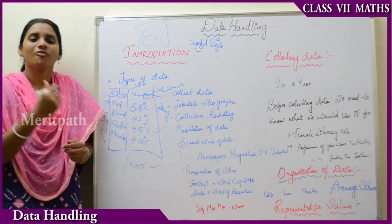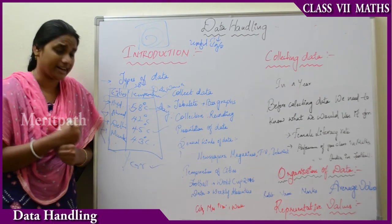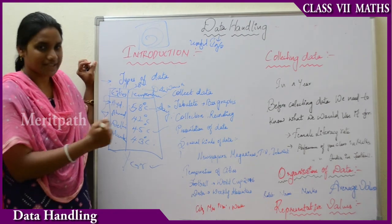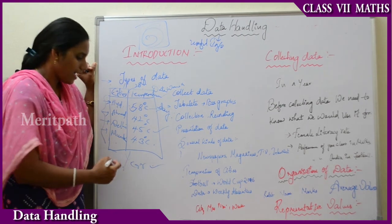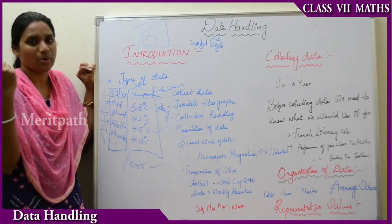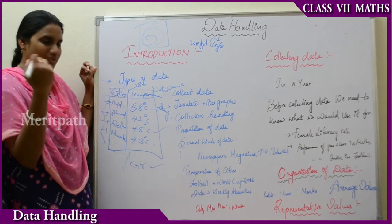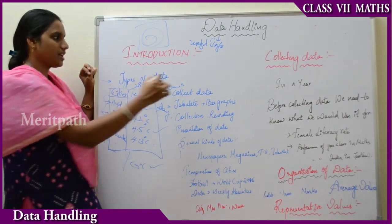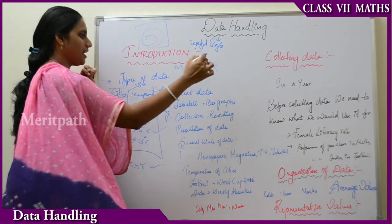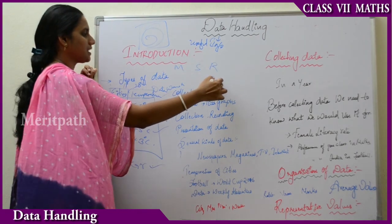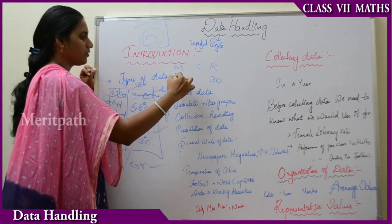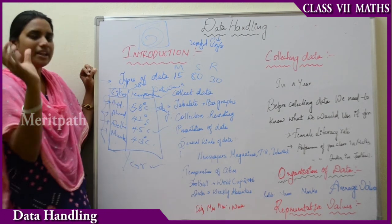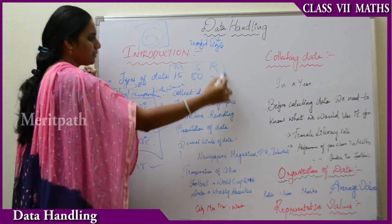Now let us see the next point, that is organization of data. What do you mean by organization of data? For example, suppose I am a maths teacher — I got my students' marks list. I got the marks of some students: Manita, Sridhar, and Rakesh. Rakesh got 30 marks, Manita got 15 marks, and Sridhar got 80 marks. Now I have recorded these in a tabular form.